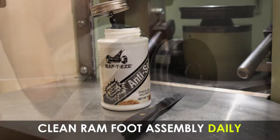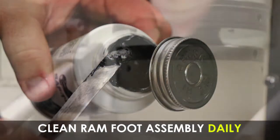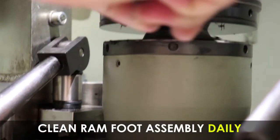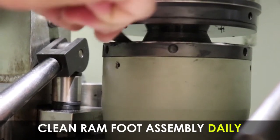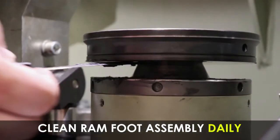With a putty knife, apply a light coat of anti-seize to the front half of the RAM body upper surface as well as the front half of the RAM floating foot lower surface.